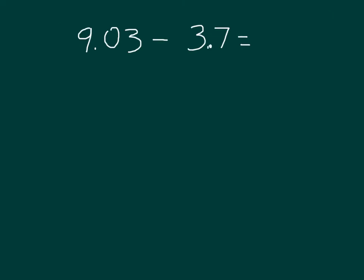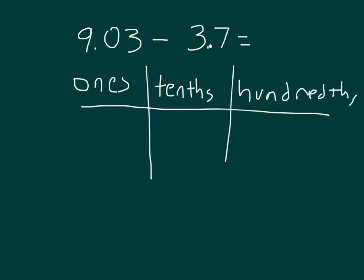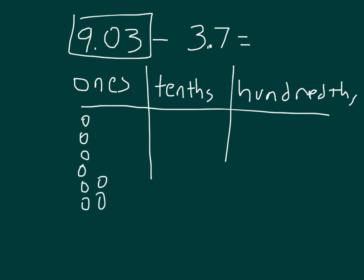Here is one last problem: 9 and 3 hundredths minus 3 and 7 tenths. We'll set it up with ones, tenths, and hundredths, since hundredths is the smallest unit. We start by modeling the first number, 9.03 — 1, 2, 3, 4, 5, 6, 7, 8, 9 in the ones place, and 3 in the hundredths place.